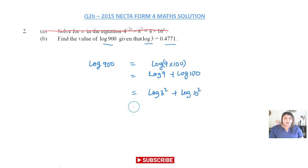Now I can use the power rule to remove the 2 and bring it down. That's the same for the other side. So now I have 2 log 3 + 2 log 10.